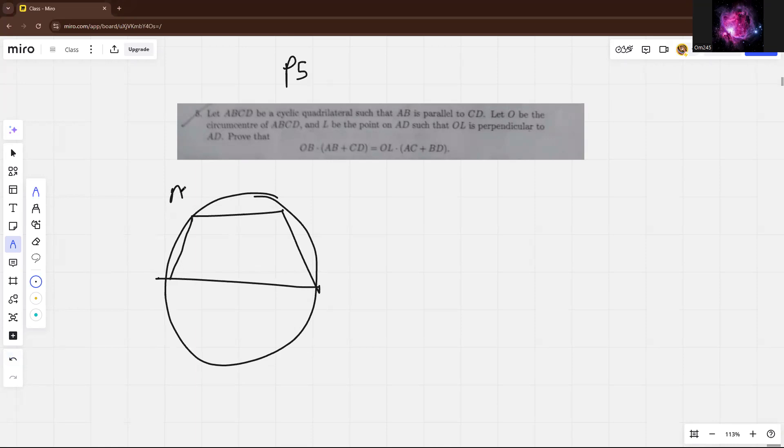Now because AB is parallel to CD, the first obvious thing you can notice is that ABCD is an isosceles trapezoid, so this side equals this and this angle equals that. We will first name some angles. This we denote by alpha, and this whole angle we will denote by angle C, and this will denote by D. Just notice angle C is equal to angle D.